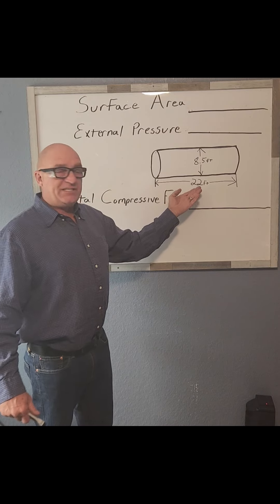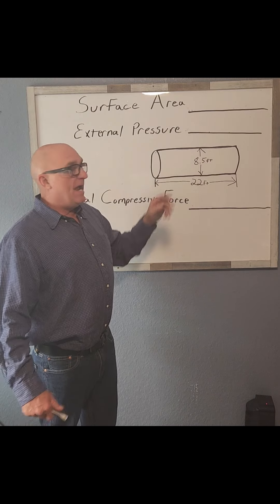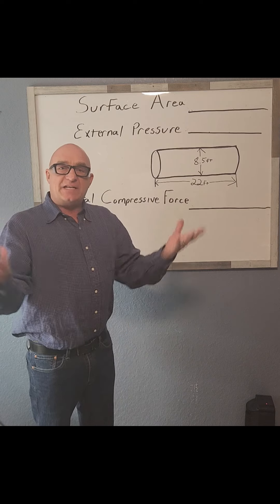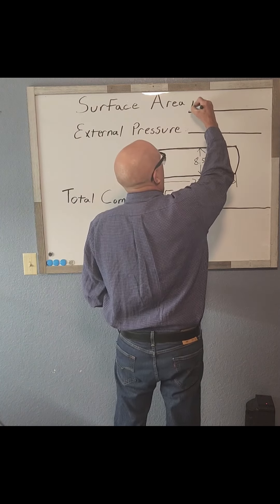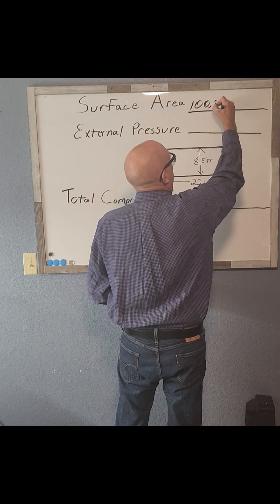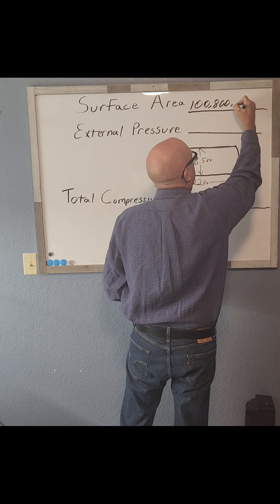If we have a cylinder that's 22 feet in length and 8.5 feet in diameter, that's going to have a total surface area of 100,800 square inches.